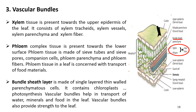Both xylem and phloem are covered on their outer surface by bundle sheath layers, made up of single-layered thin-walled parenchyma cells. The cells in the bundle sheath contain chloroplasts, and hence this layer is also concerned with photosynthesis. The vascular bundle helps in transport of water, minerals, and food in the leaf, and also provides strength to the leaf.